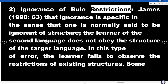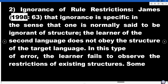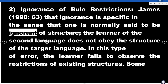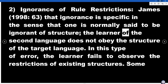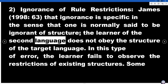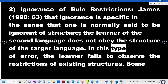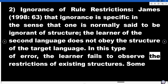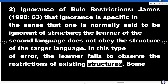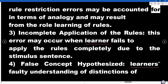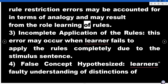Ignorance of rule restrictions: James (1998, p. 63) states that ignorance is specific in the sense that one is normally said to be ignorant of a structure. The learner of the second language does not obey the structure of the target language. In this type of error, the learner fails to observe the restrictions of existing structures. Some rule restriction errors may be accounted for in terms of analogy and may result from rote learning of rules.